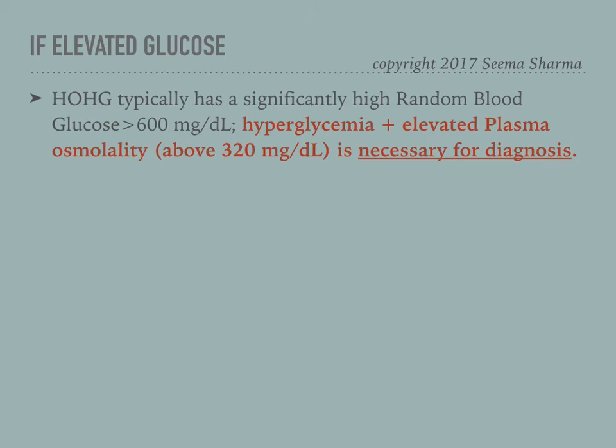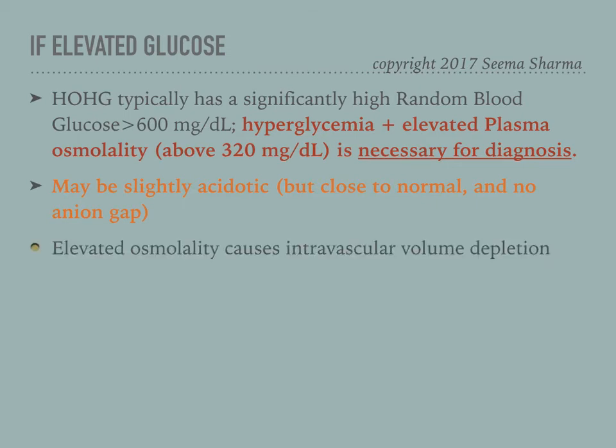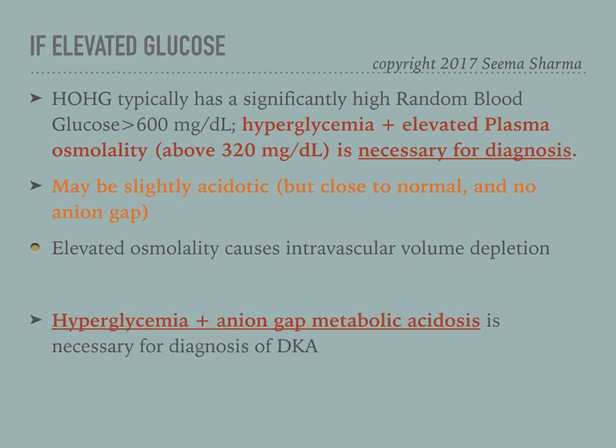In HHS, the patient may be slightly acidotic but the pH will still be close to normal and there will not be an anion gap. The elevated osmolality causes intravascular volume depletion. Now, if you have hyperglycemia plus anion gap metabolic acidosis, the diagnosis is diabetic ketoacidosis.